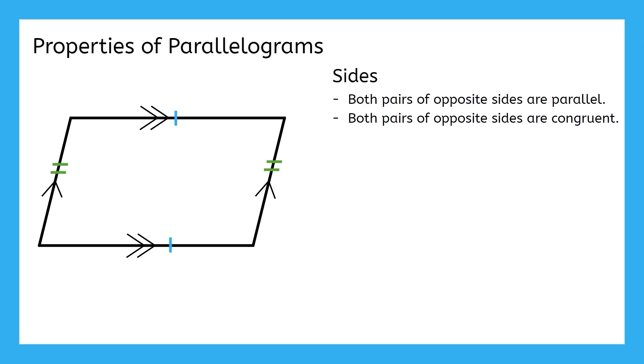It would have to shift, and it would no longer be parallel to the left side. So, in order for both pairs of sides to be parallel, they also need to be congruent. These two properties go hand in hand because you can't have one without the other. If the opposite sides are parallel, then they are congruent. The converse is also true. If the opposite sides are congruent, then they are parallel.